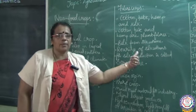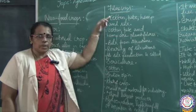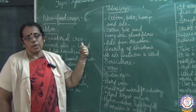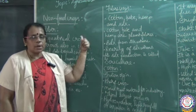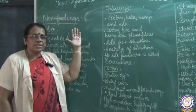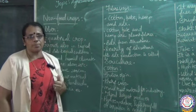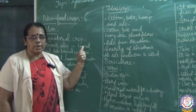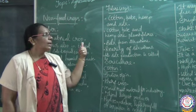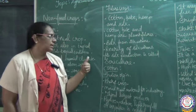The rearing of silkworms for silk production is known as sericulture. To recap the fiber crops: cotton, jute and hemp are plant fibers, while silk is an animal fiber obtained from silkworms. Rearing of silkworms for silk production is called sericulture.